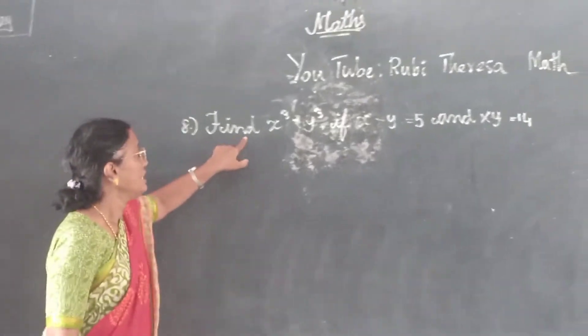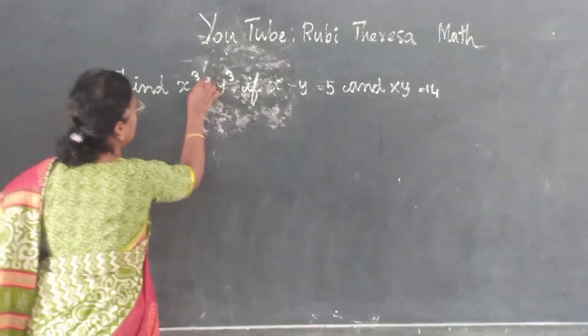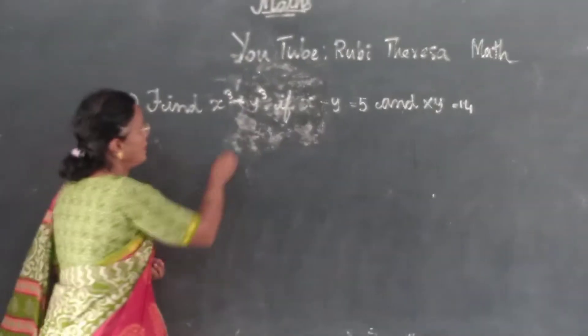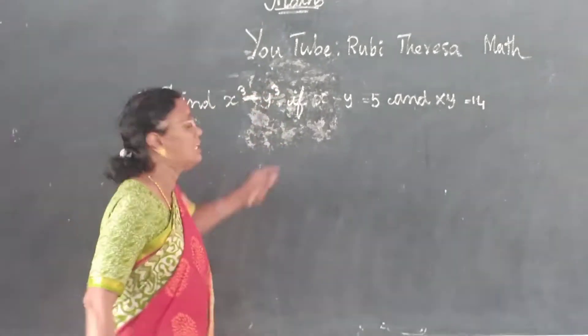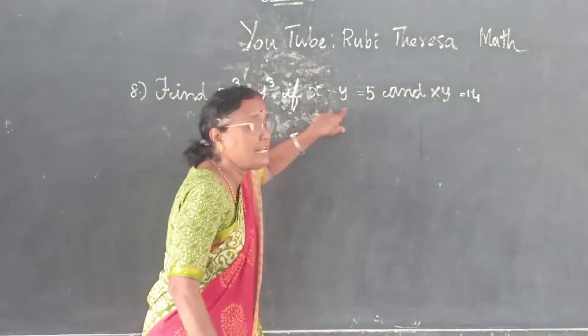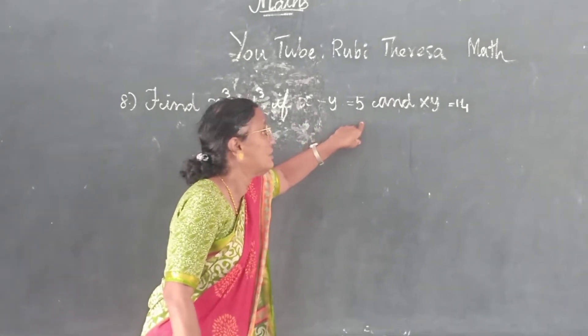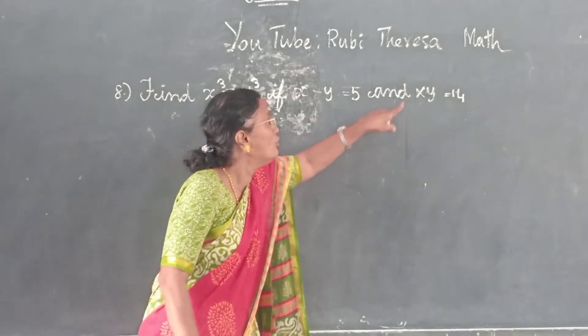Find x³ minus y³ if x minus y equals 5 and xy equals 14.